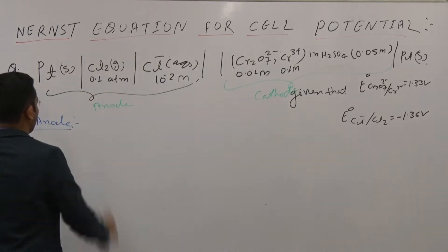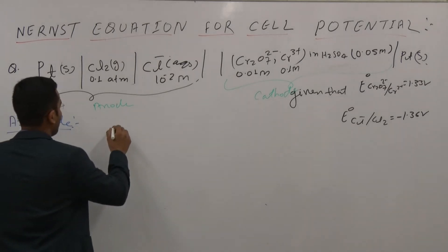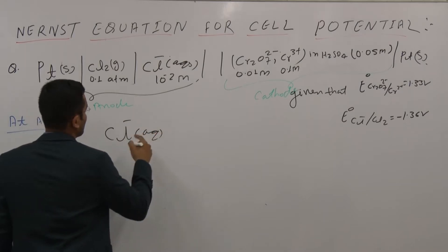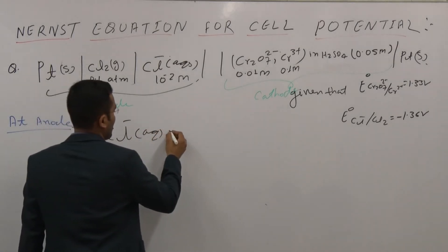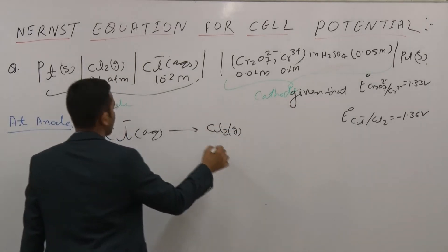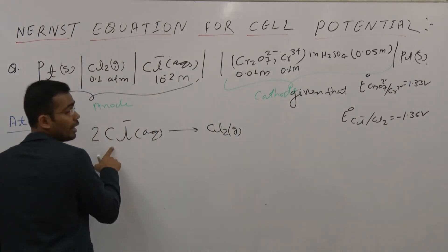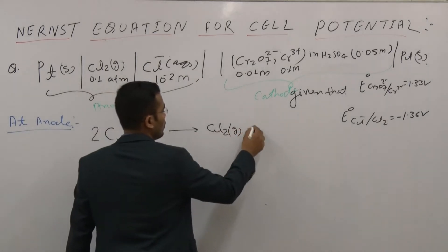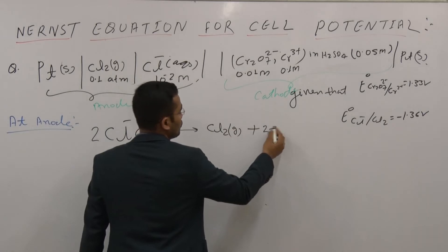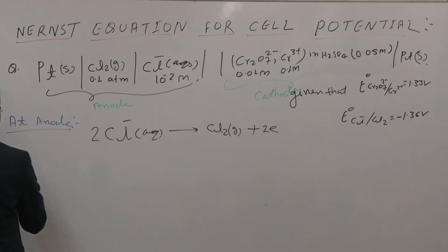At the anode, oxidation occurs. So Cl⁻ (aqueous) will oxidize to form Cl₂ (gas). Balancing: 2Cl⁻ → Cl₂ + 2e⁻. From one Cl, one electron is lost; therefore from 2Cl, two electrons are released. This is the balanced anode half-cell reaction.